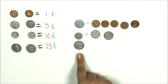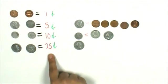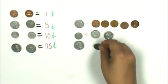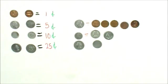The value of a quarter is 25 cents. The value of a nickel is 5 cents. I'm going to skip count by 5 until I get to 25 cents.